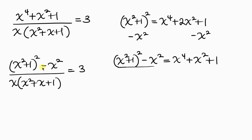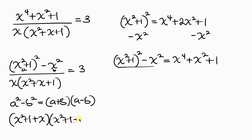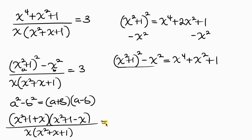Notice that what we have in the numerator is an expression in difference of two squares. An expression in difference of two squares can be written as: a squared minus b squared equals a plus b times a minus b. So x squared plus 1 is our a, and x is our b. This gives us x squared plus 1 plus x, times x squared plus 1 minus x, all over x times x squared plus x plus 1, equal to 3.